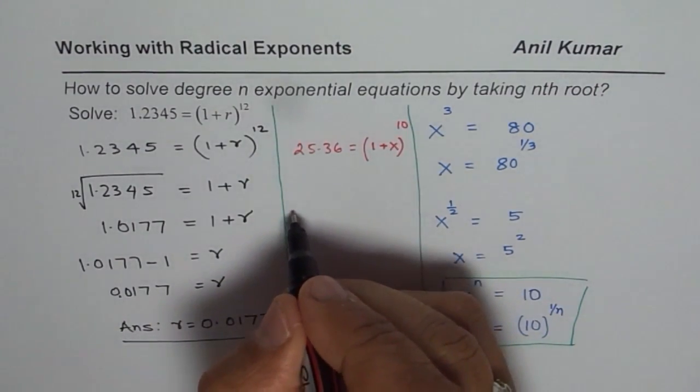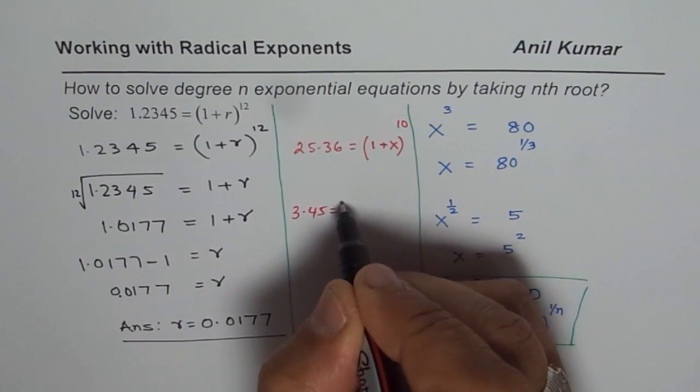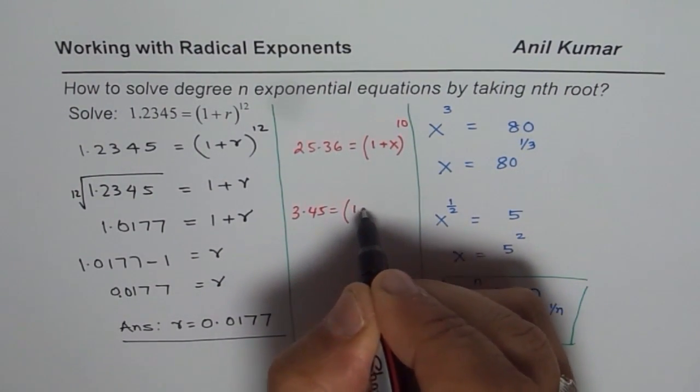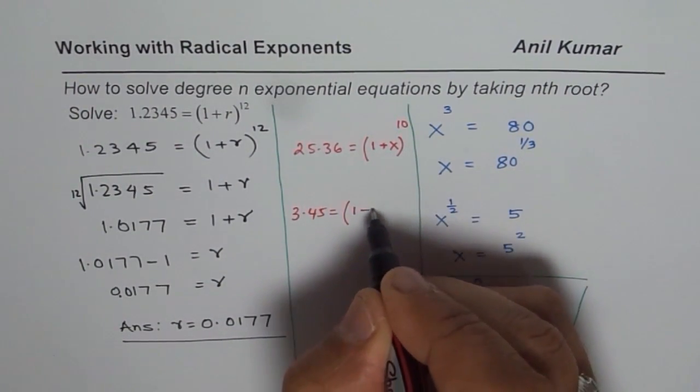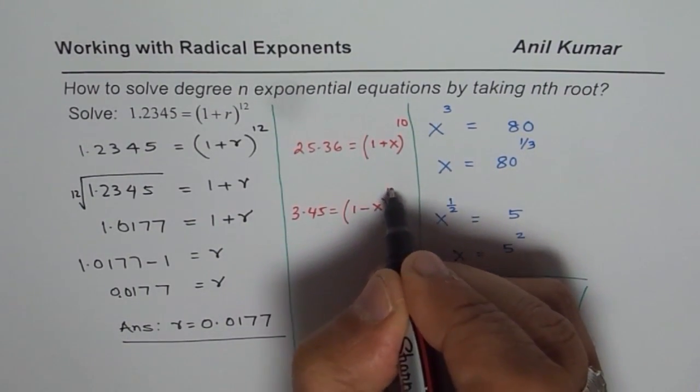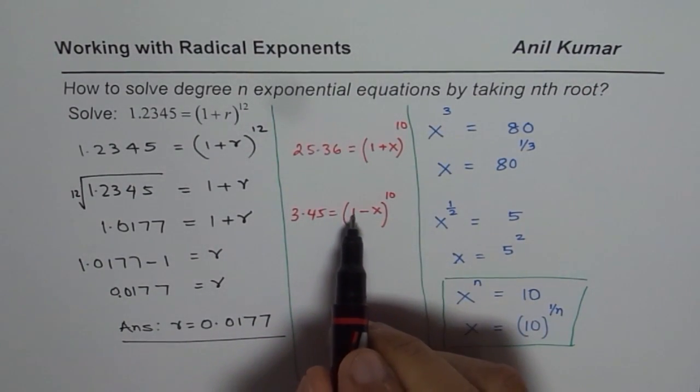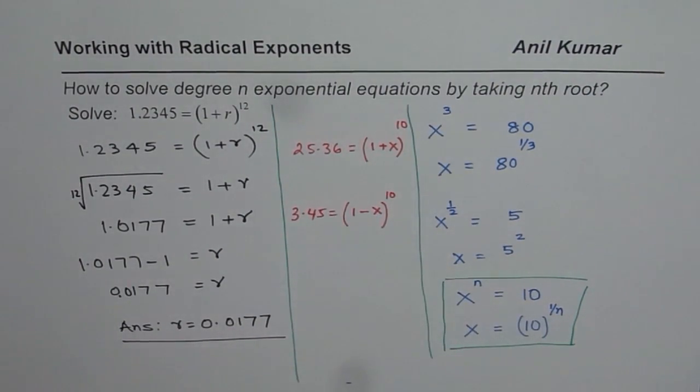Another one could be something like this. 3.45, I am just writing some general numbers here, equals to 1 minus x to the power of, let us say this is also 10. So what could that number be? So figure out these answers. Do they have a solution? And if they have, what is the solution of x?